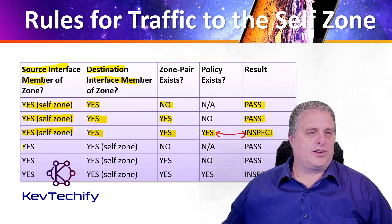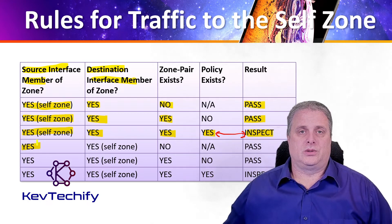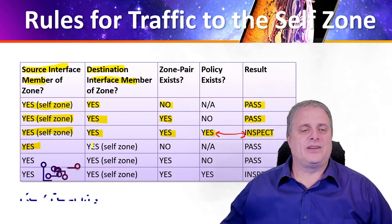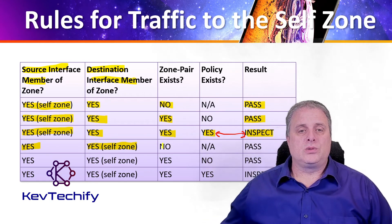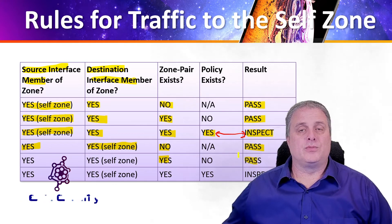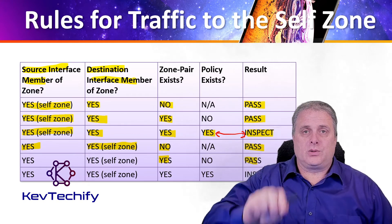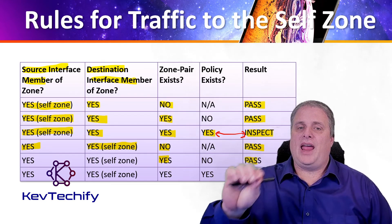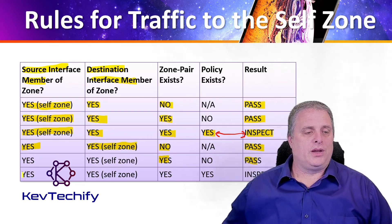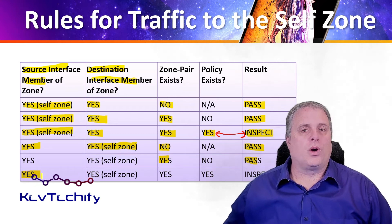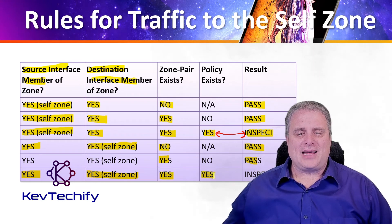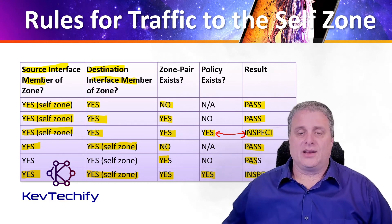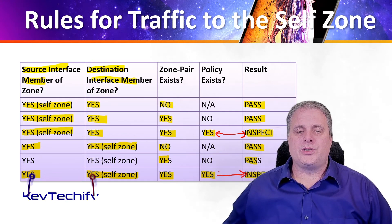The next part covers traffic coming from one of our established zones destined for the self-zone — destined for the router itself. If there is no zone pair, or if there is a zone pair with no policy, we're going to pass that data. So data from one of our zones to the device itself, whether or not we have a zone pair, we pass it. But if we have data originating from one of our defined zones destined to the router itself, and we have a zone pair with a policy, we are going to inspect that data.